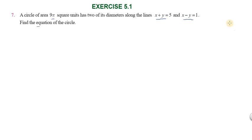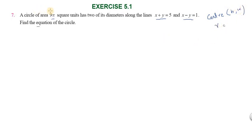To find the equation of the circle, we begin by calling the center (h, k), then the radius r. The area is given as 9π square units.